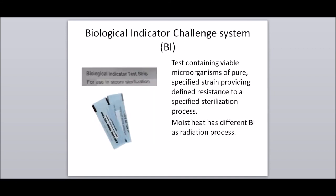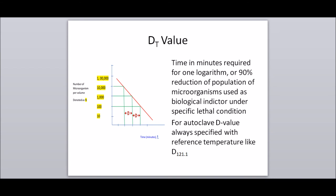Biological indicator challenge system, or BI: a test containing viable microorganisms of a pure, specified strain providing a defined resistance to a specified sterilization process. Moist heat has a different BI than a radiation process. D value: the time in minutes required for one log reduction, or 90% reduction, of a population of microorganisms used as a biological indicator under specific lethal conditions. For autoclave, the D value is always specified with a reference temperature, like D 121.1°C.